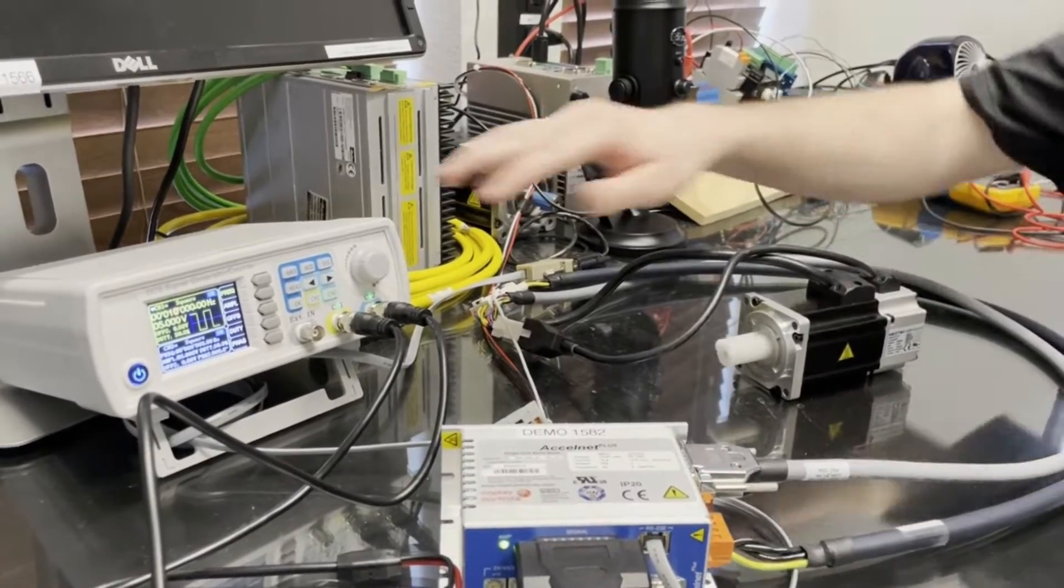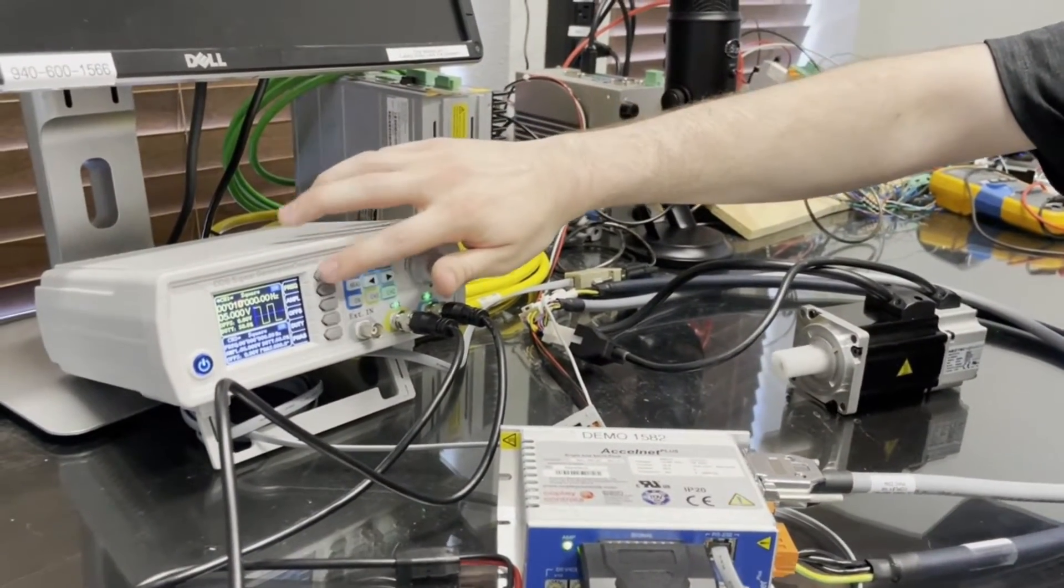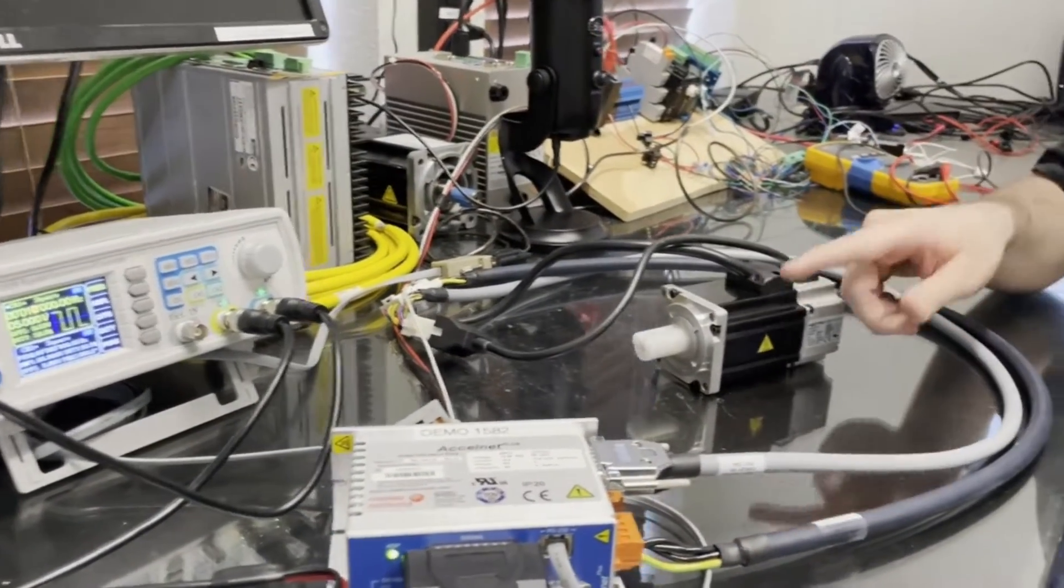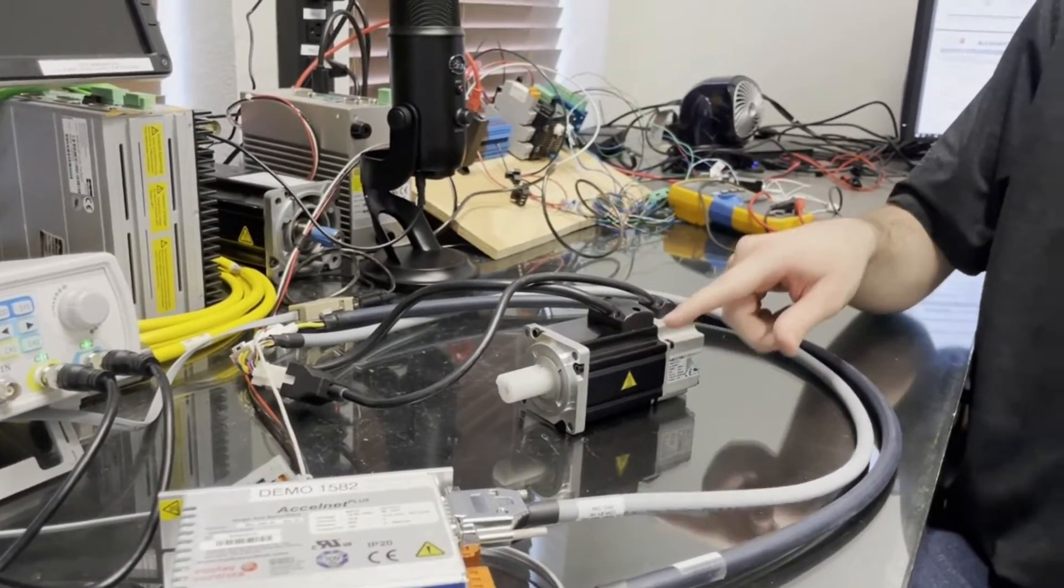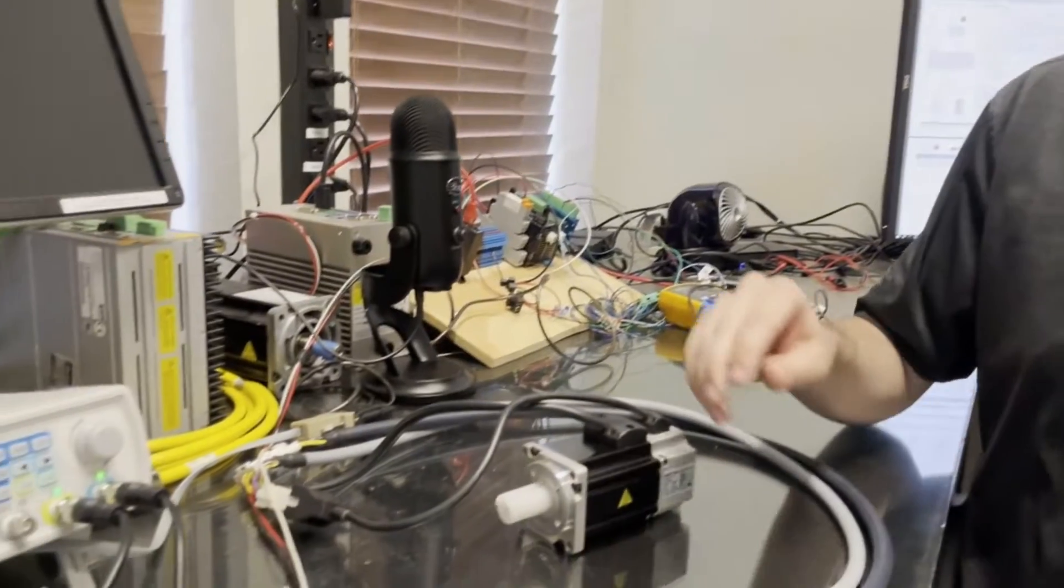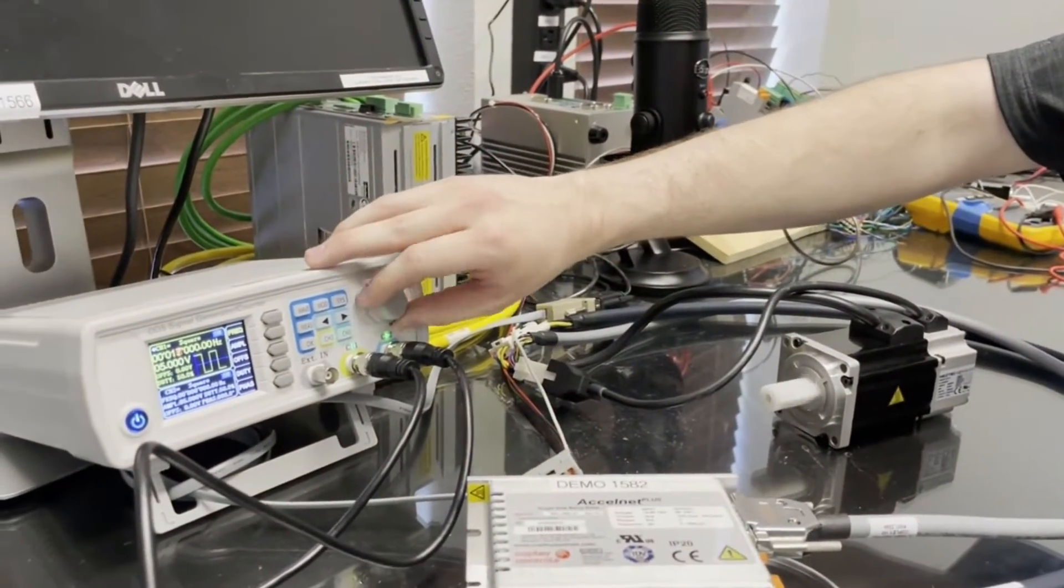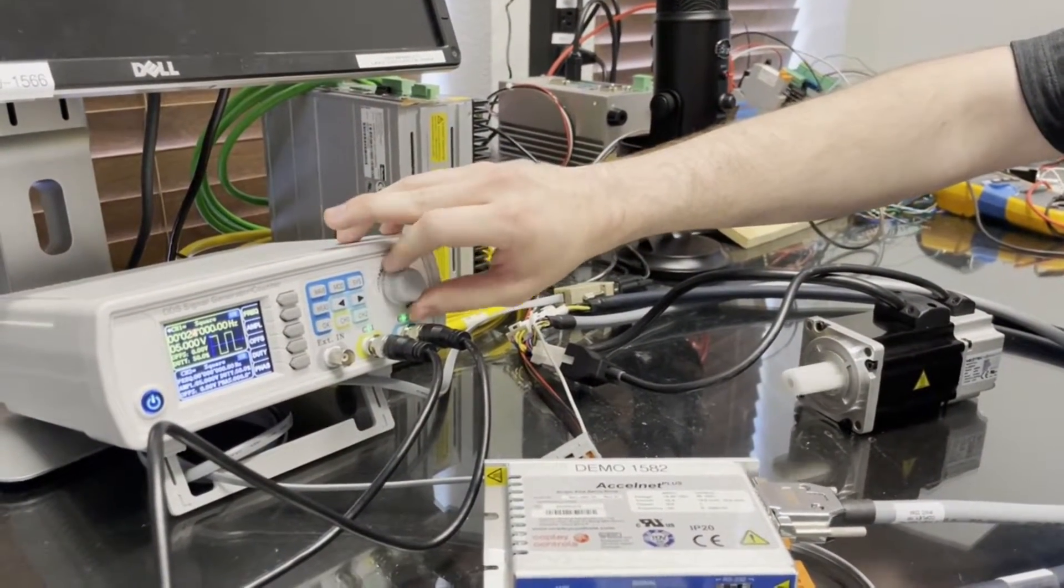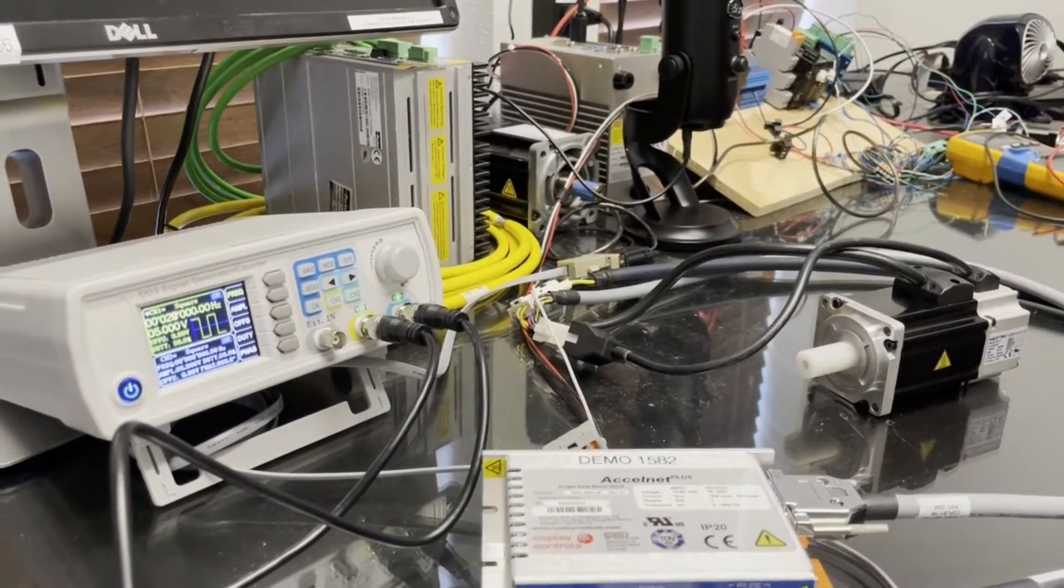I'm sending 10,000 pulses per second right now, and that actually correlates to one rev per second because we're using a 10,000 count encoder. And again, if I increase that, we just get more speed.